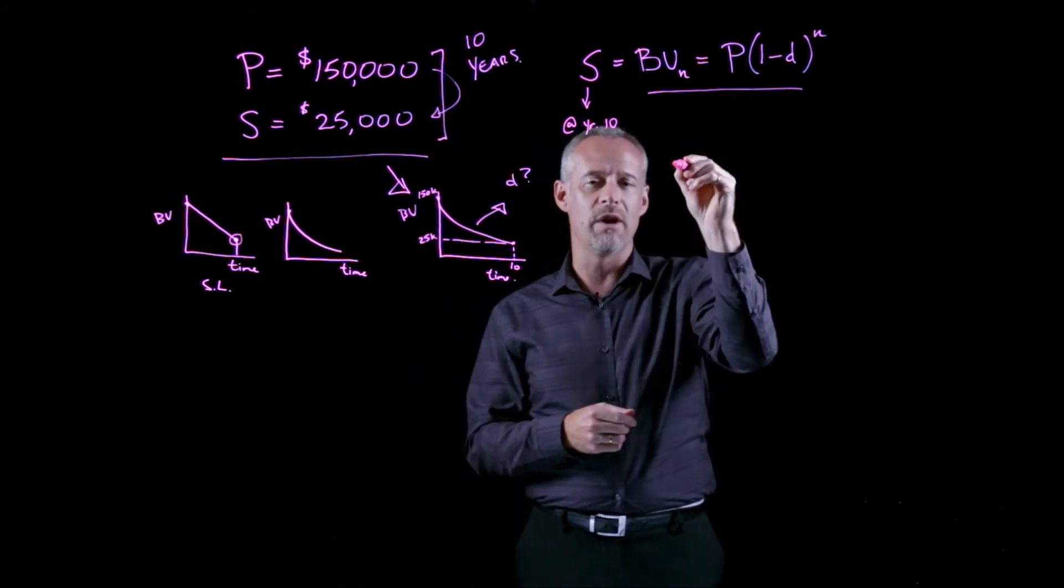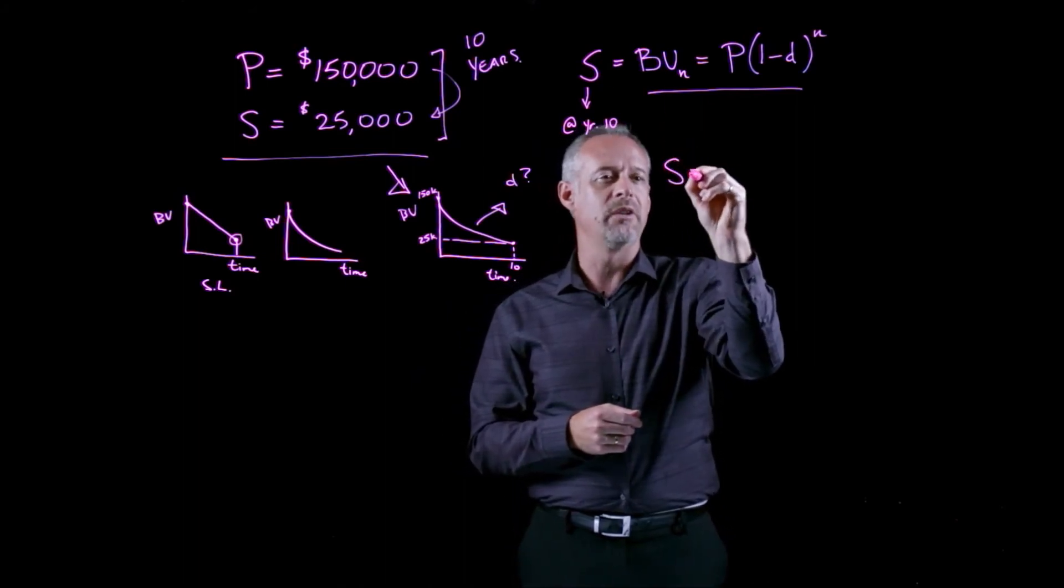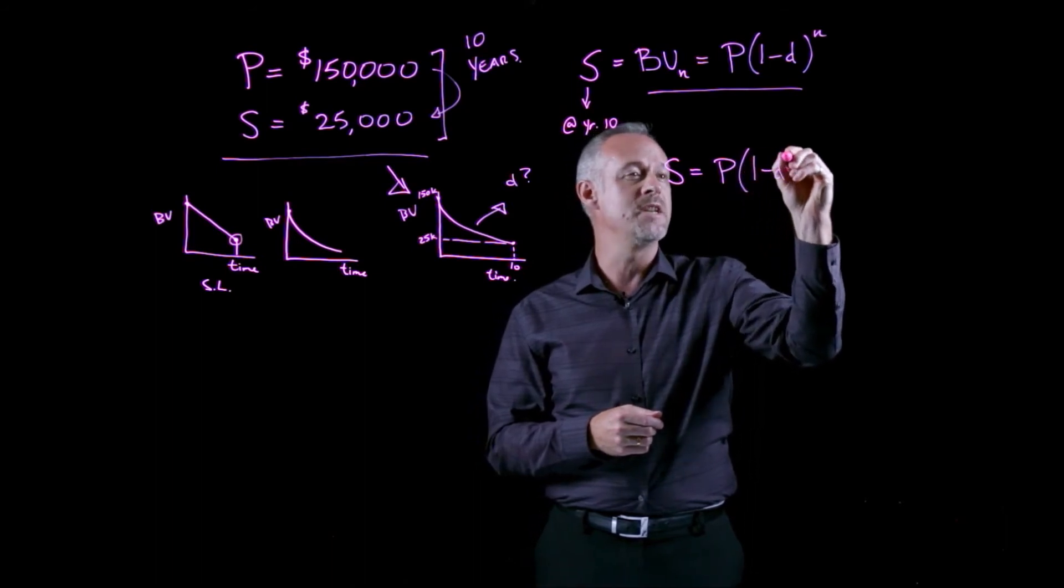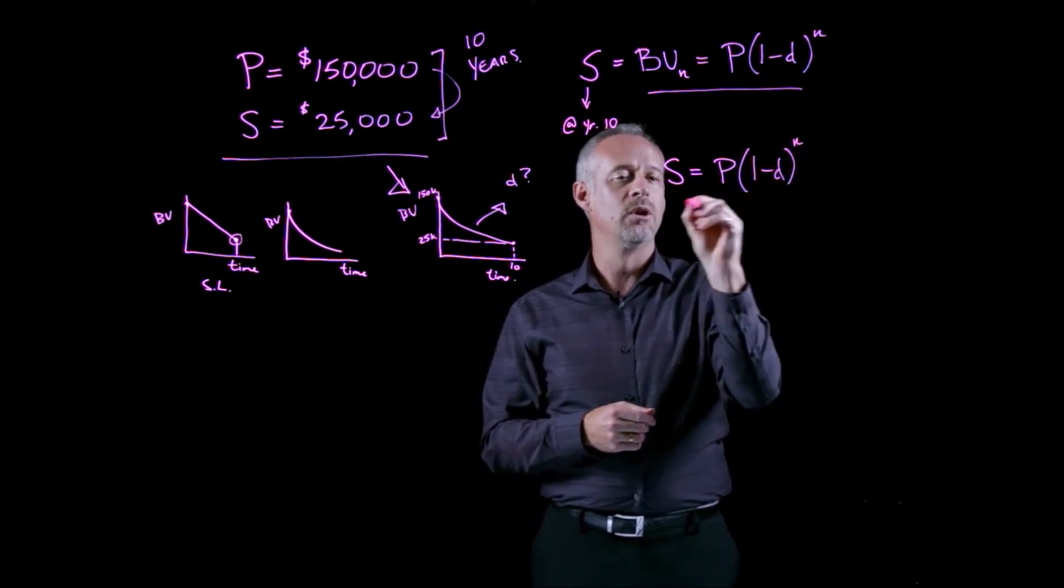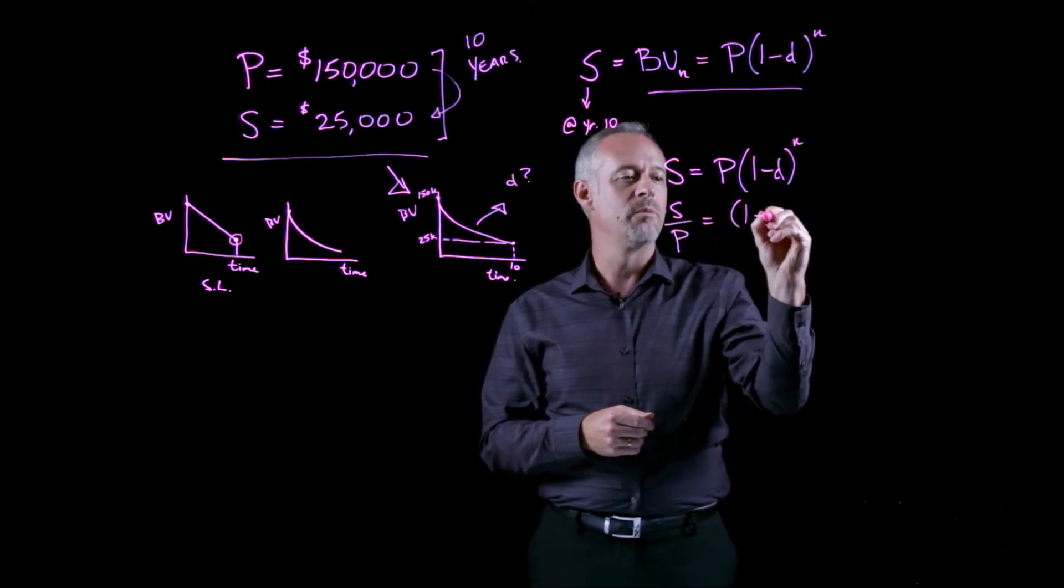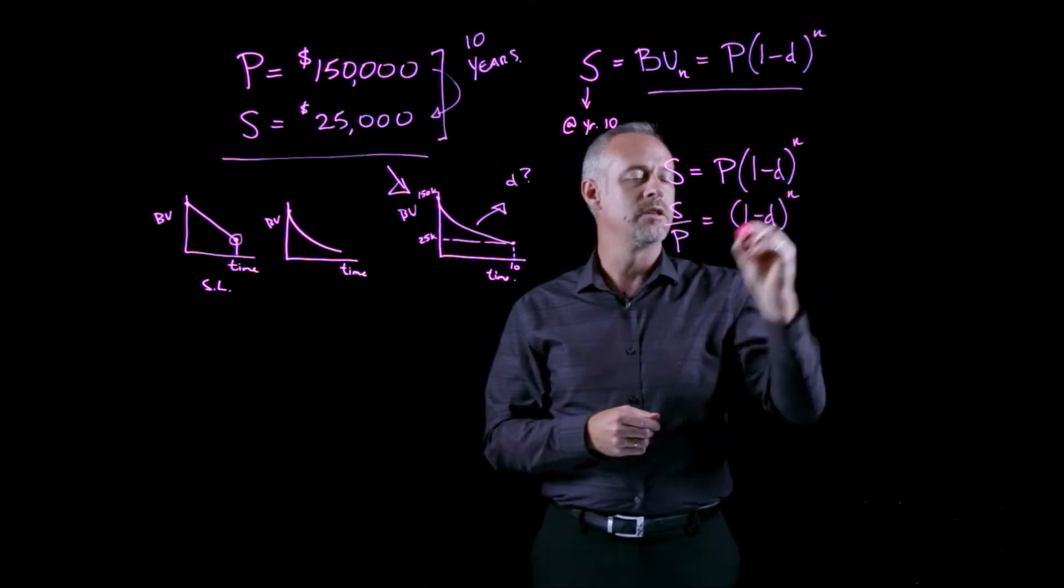In other words, I could rewrite the formula as simply the salvage value is equal to the purchase price times 1 minus d to the n. Rearranging that, I have s over p is 1 minus d to the n.